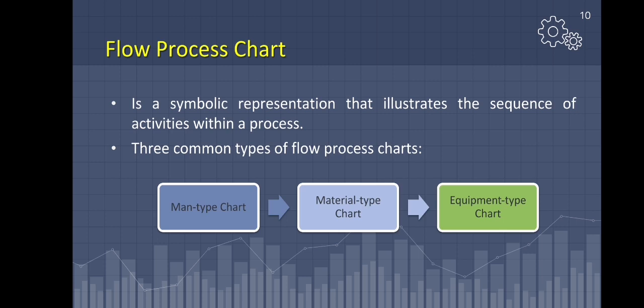It contains a few decision points, and for this reason it is sometimes referred to as a process sequence chart. A useful feature of this technique is that it can be drawn up as the process is happening, thus providing an accurate description of the process. There are three common types of flow process charts based on what is being charted: a man-type chart shows the activities of a person or group of people, a material-type chart shows what happens to a product or item as it moves, and an equipment-type chart shows the activities from the viewpoint of the machine or equipment involved.